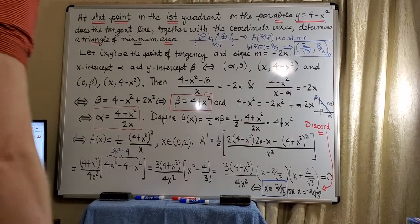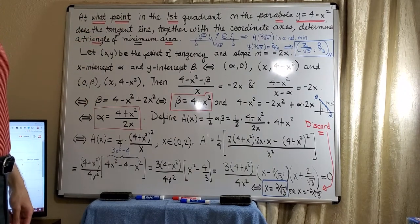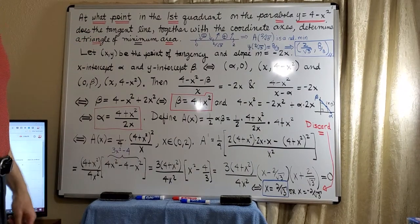Let's look at another optimization problem. At what point in the first quadrant on the parabola y = 4 - x²...